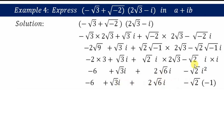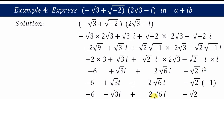So we have: -6 + √3·i + 2√6·i - √2·i². Now substituting i² = -1, the term -√2·i² becomes +√2. So the expression becomes: -6 + √3·i + 2√6·i + √2.